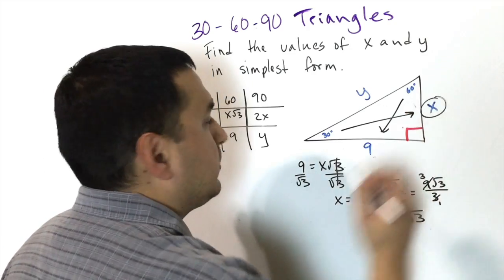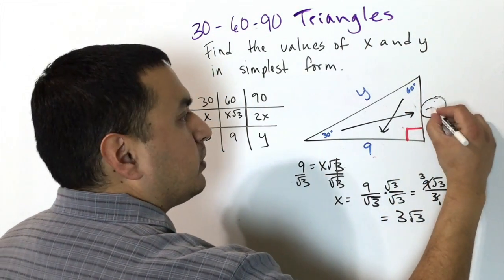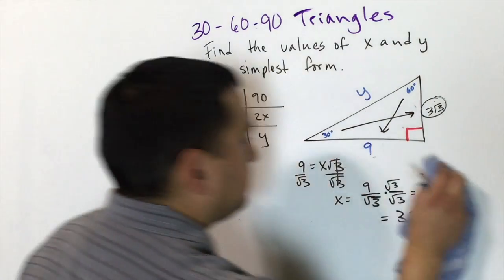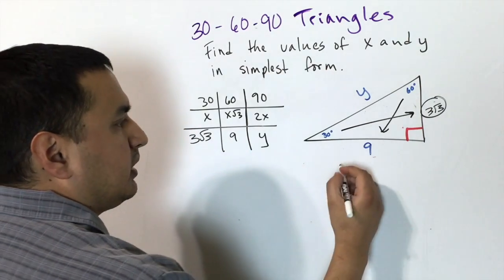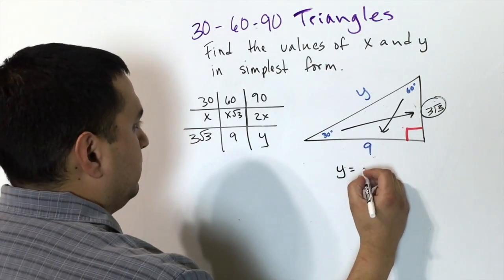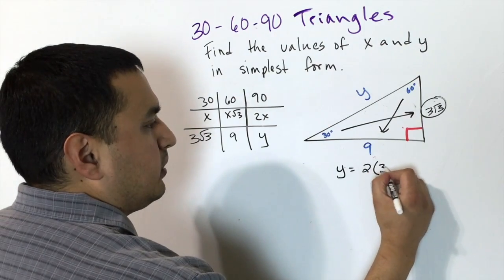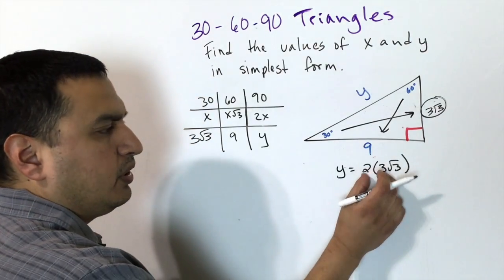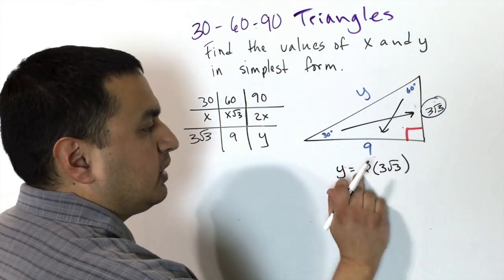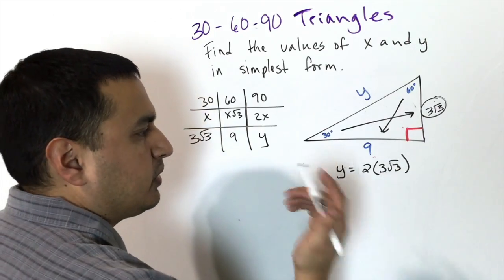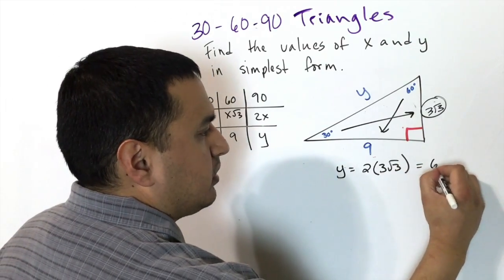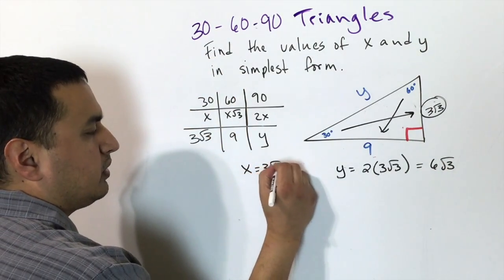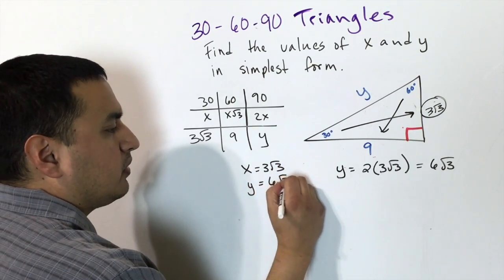Now that we know x = 3√3, we can find y. Since y is across the 90° angle, y = 2x = 2 · 3√3. The two and three multiply together while √3 tags along, giving y = 6√3. So x = 3√3 and y = 6√3.